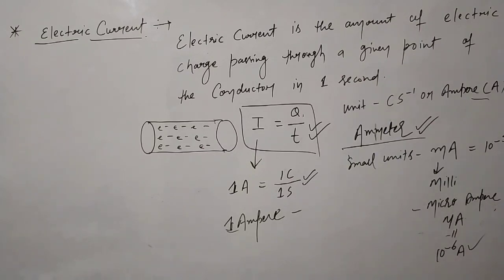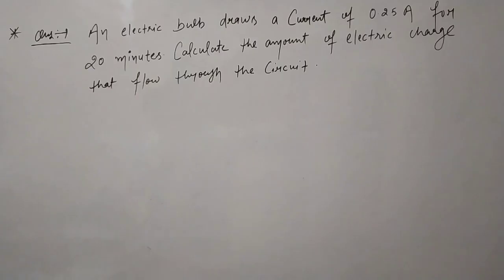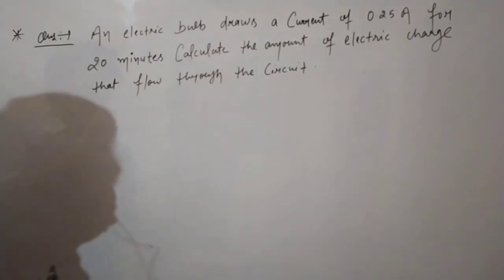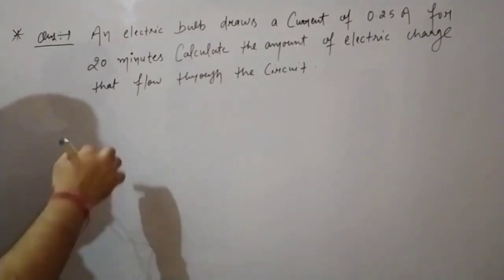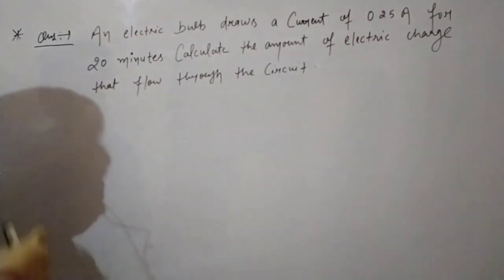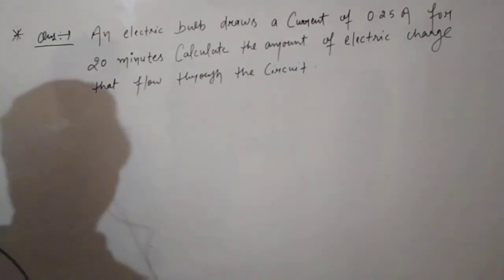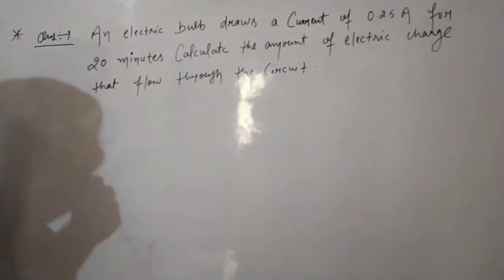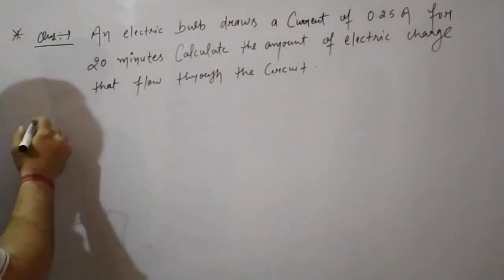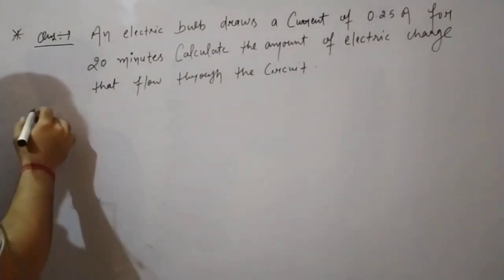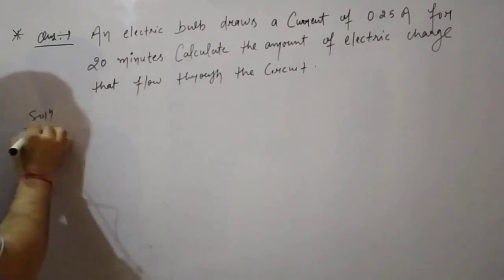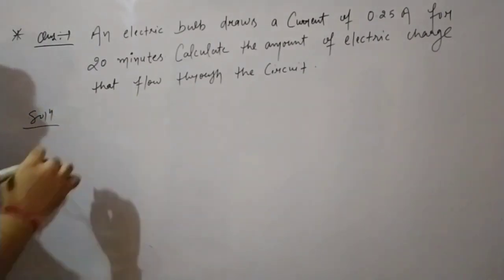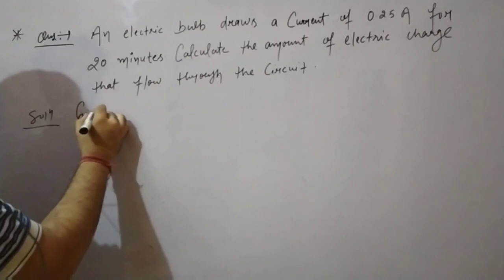The key concept here is free electrons. We have talked about electrons and protons — what is an atom, what is an electron, proton, neutron. If you have six electrons and four protons, the total charge would be 2e minus.